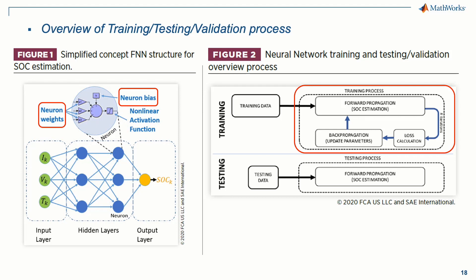The loss is then backpropagated using a series of partial derivatives with respect to each of the neural network weights and bias, updating their values, and then repeating the forward propagation plus the backpropagation steps. This iterative process continues until meeting predetermined criteria, such as reaching a particular accuracy or a certain number of iterations. At regular intervals during training, a separate validation dataset is fed into the model candidate to validate accuracy using forward propagation without changing any learnable parameters.